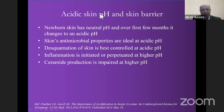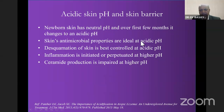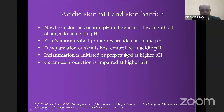Regarding acidic skin pH and skin barrier: newborn skin has a neutral pH, which changes to acidic over the first few months. In prematurity, the pH will be more alkaline or neutral. Skin antimicrobial properties are ideal at an acidic pH, and desquamation of the skin is best controlled at an acidic pH. Alkaline pH makes the skin more susceptible to infection and desquamation. Inflammation is initiated and perpetuated at higher pH, and ceramide production is impaired at alkaline pH — which is why maintaining acidic pH is critical.